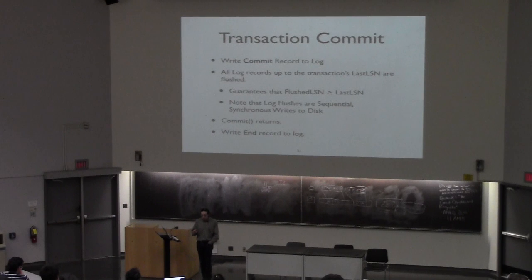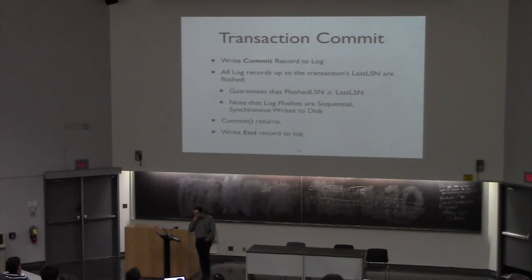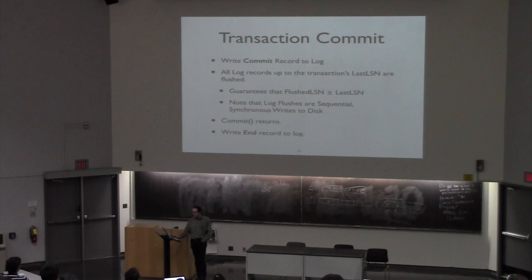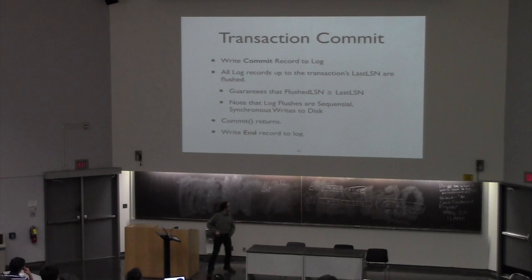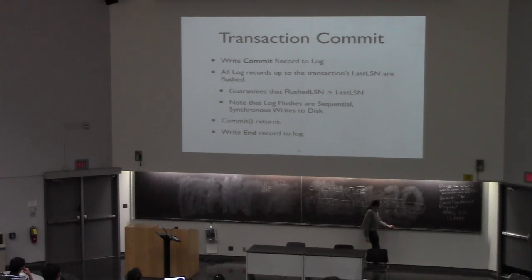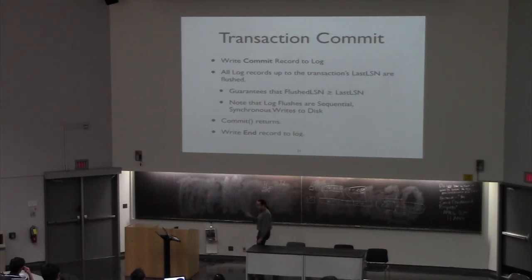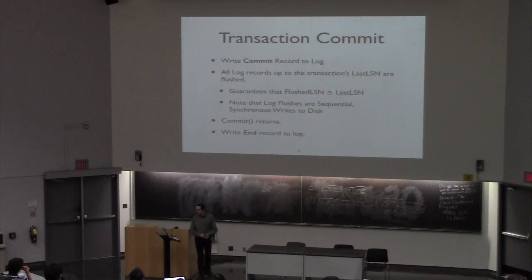These compensation log records are going to help us as we are recovering from a crash. We discussed how the commit process itself happens. To commit a transaction, we need to make sure that the log is properly flushed up to the last operation that the transaction has performed. Because these operations are sequential, that's a relatively inexpensive operation — just one big sequential write. Once we do that, we can return from commit and inform the user that their data is safely on disk, then flush everything to disk, and once we have flushed it, we can write an end record to the log.